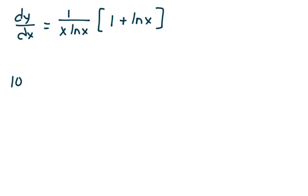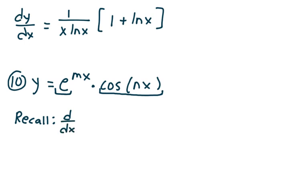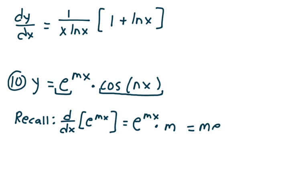Let's take a look at problem number 10. Suppose y equals e to the mx times cosine of nx. I want to find the derivative of each of these functions separately first. The derivative of e to the mx with respect to x is equal to e to the mx times the derivative of mx, which is m — remember, m is constant — so this is me to the mx.